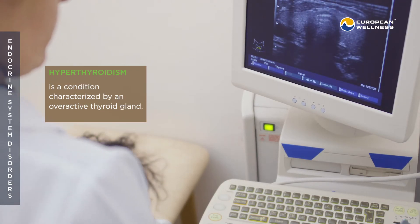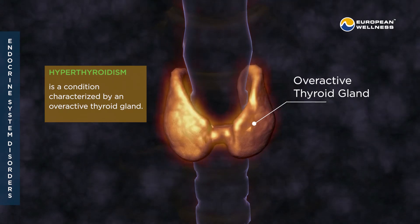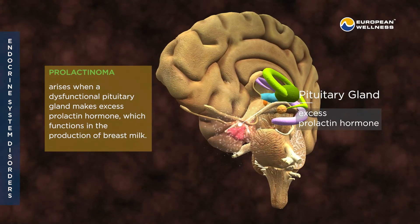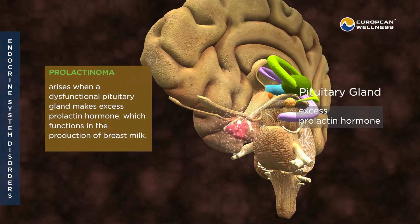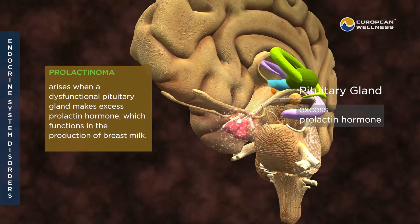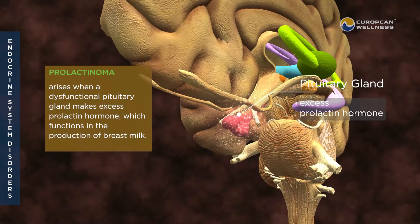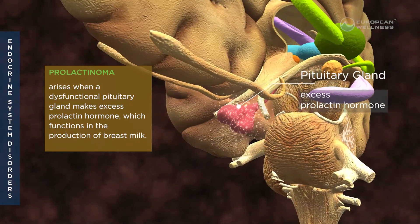Hyperthyroidism is a condition characterized by an overactive thyroid gland. Prolactinoma arises when a dysfunctional pituitary gland makes excess prolactin hormone, which functions in the production of breast milk.